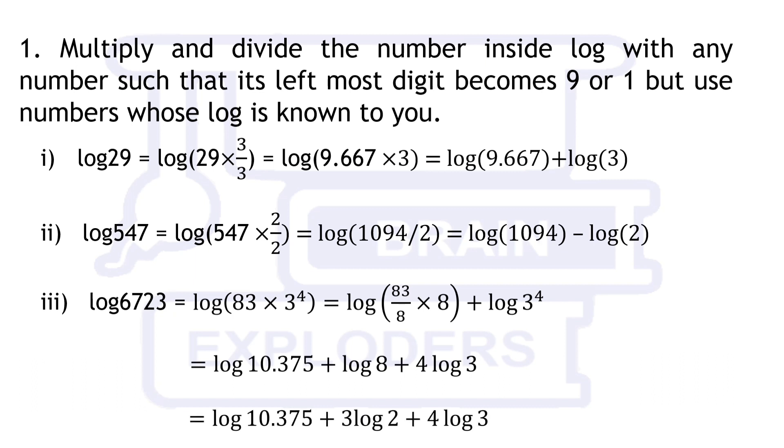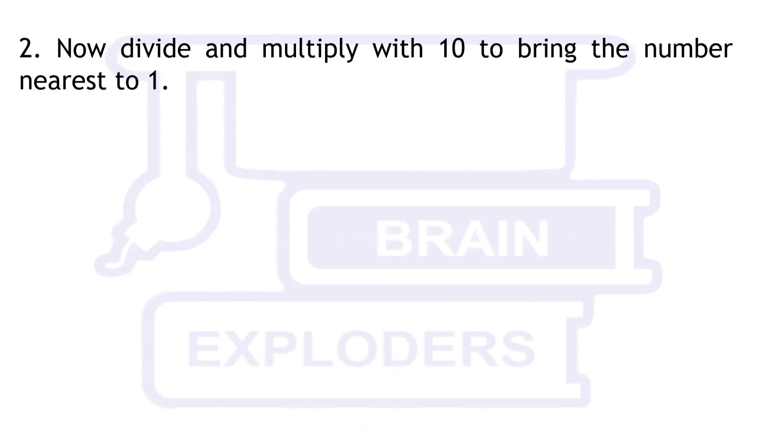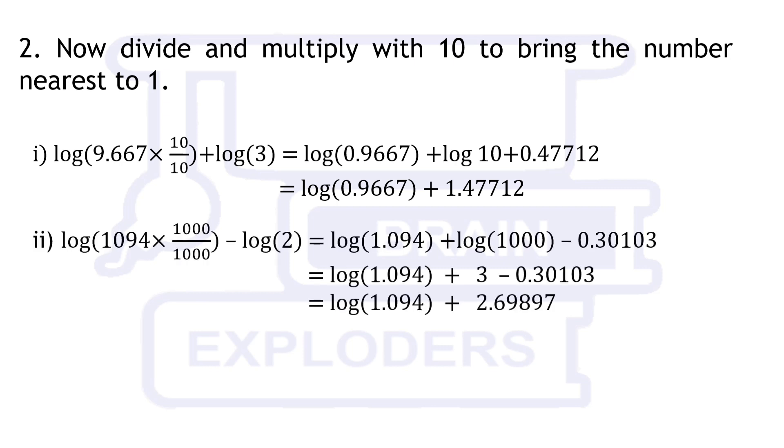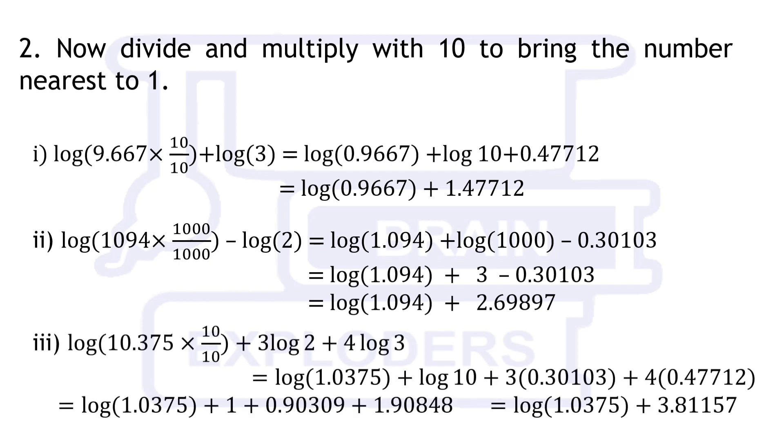Now divide and multiply the number inside log by 10 to bring it near 1 so that we can apply the series expansion. 9.667 over 10 is equal to 0.9667 which is very near to 1. 1094 should be divided by 1000 and 10.375 should be divided by 10 to bring their values near 1. Again write them separately by using the properties of log.